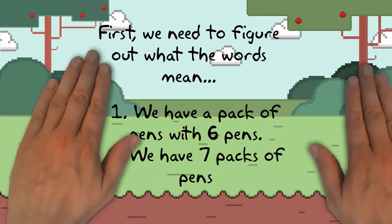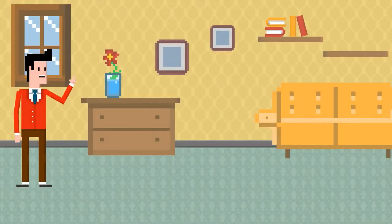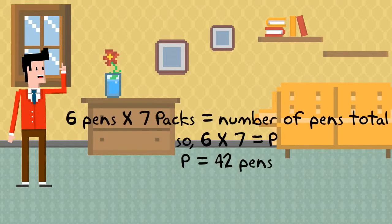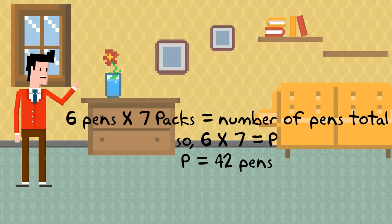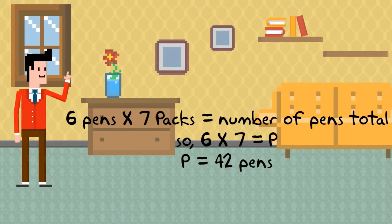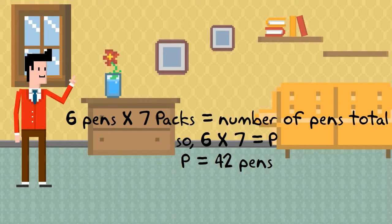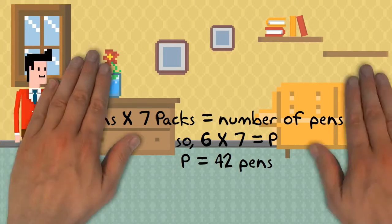Excellent. So let's look at what you figured out. You see that six pens times seven packs equals the number of pens total. We'll use P for pens. So six times seven equals P, with P equaling 42 pens.